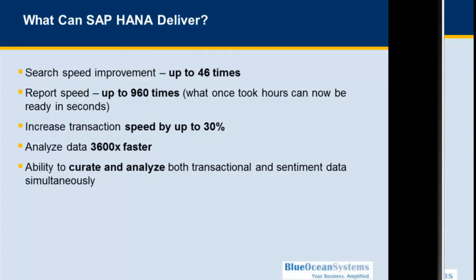Some of these reports which could take hours can now be completed in seconds. Transaction speed can also be increased by up to 30%, and you can analyze data more effectively. One of the other big benefits of SAP Business One and HANA is that both the ERP data and the analytics environment share the same infrastructure.